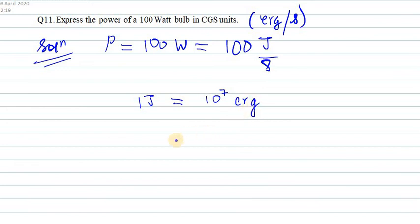Now in this case we just need to put the value of one joule in above, so 100 into replacing one joule as 10 raised to power 7 erg over seconds. We can see we have two zeros.